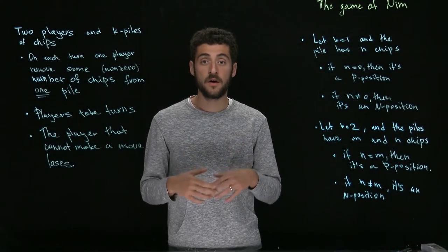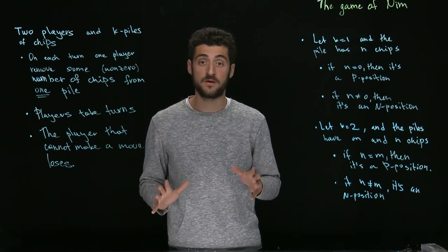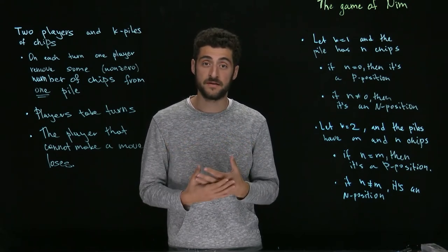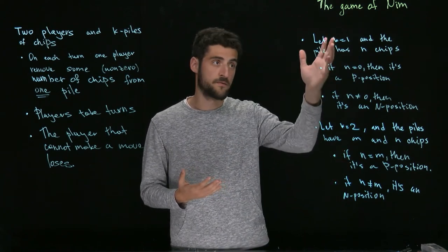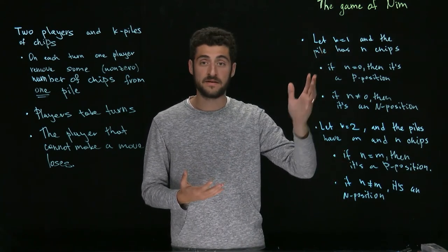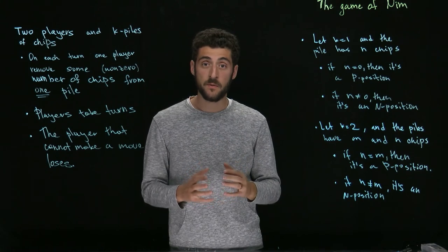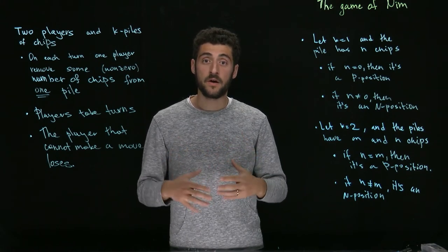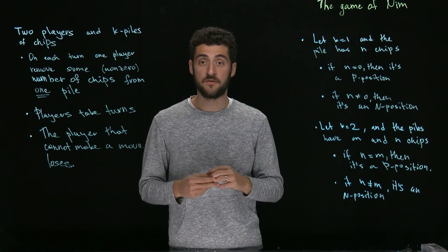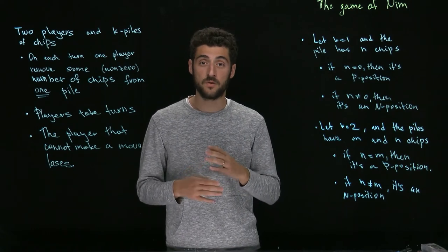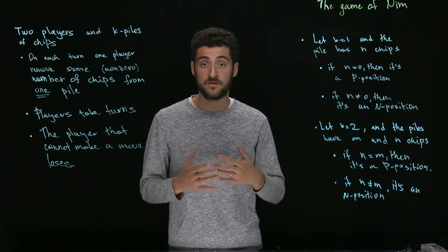However, for k equal to three, the situation becomes way worse. We don't have this nice analysis that we can use like in k equal to two, or the very simple analysis like in k equal to one. So in the rest of this video, we are going to create a theory that would allow us to study the game of NIM for k equal to three, four, five, and so on.